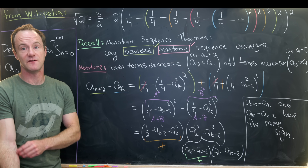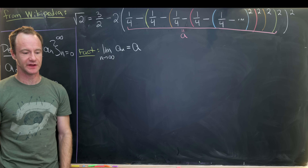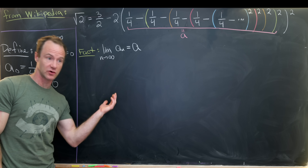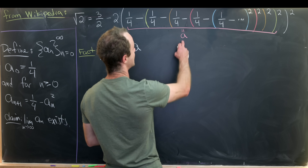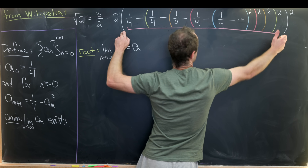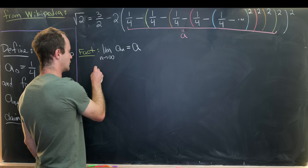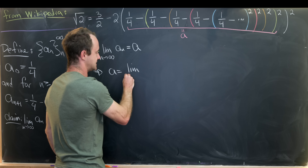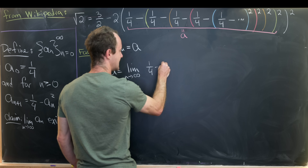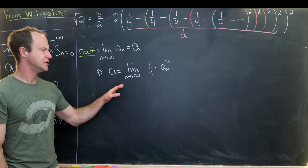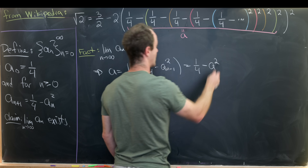Now that we've shown the recursively defined sequence Aₙ converges, say to a number A, we use the standard trick for convergent recursive sequences to find the limit. Since the limit as n→∞ of Aₙ equals A, we can write A as the limit of 1 quarter minus Aₙ₋₁ squared. Using limit rules to bring the limit inside gives us A equals 1 quarter minus A squared, where A is the limiting value.